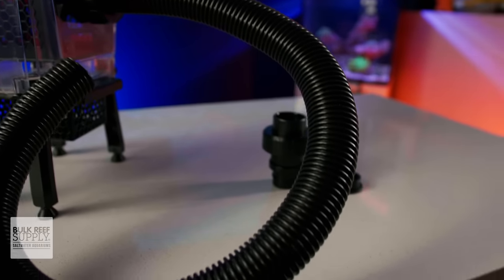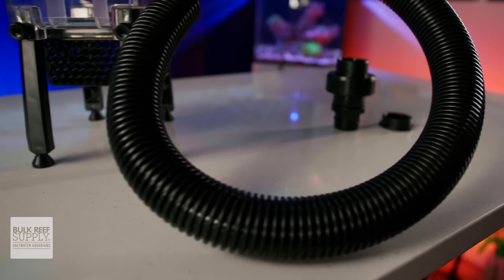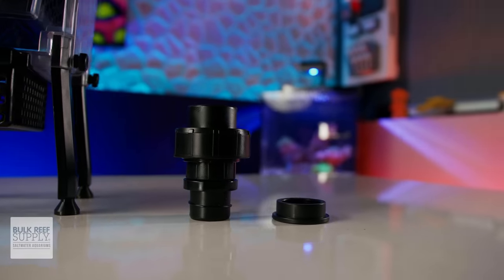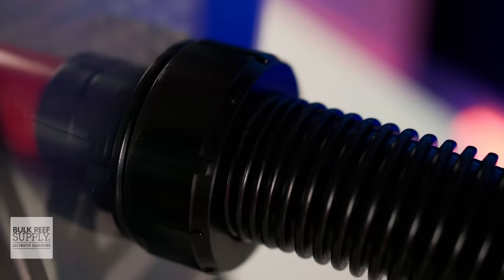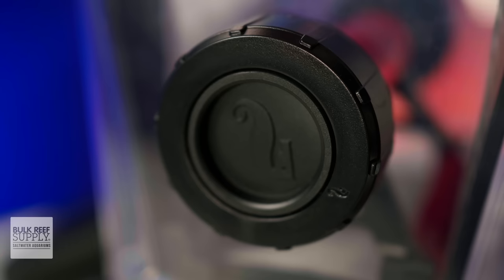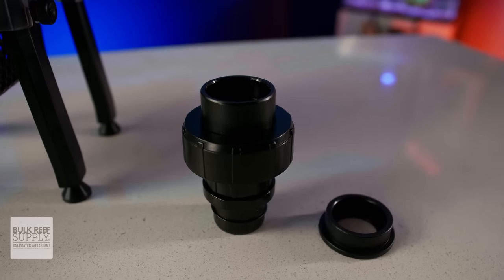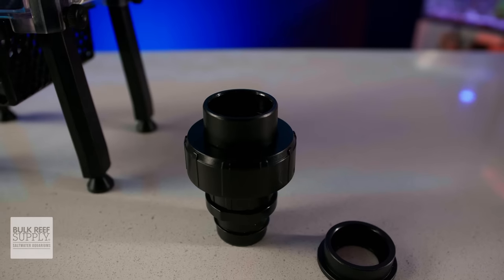Red Sea also includes corrugated hose with a threaded collar for quickly connecting and disconnecting the Reef Mat, as well as a union adapter and sealant for plumbing the Reef Mat to your aquarium's drain line, meaning you likely won't need to purchase any other fittings to get it set up on your system, which is a really nice touch and adds to the overall value of the Reef Mat.